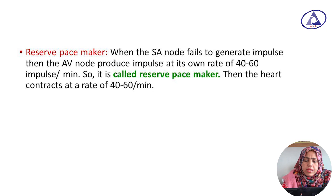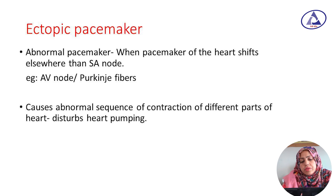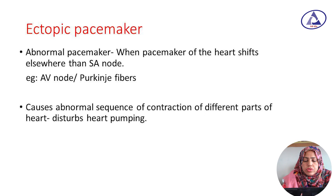What is the reserve pacemaker? When the SA node fails to generate impulses, the AV node produces the impulse at its own rate of 40 to 60 impulses per minute — so it is called the reserve pacemaker. What is the ectopic pacemaker? The ectopic pacemaker is also called the abnormal pacemaker. When the pacemaker of the heart shifts elsewhere than the SA node, it is called the abnormal pacemaker. The AV node and Purkinje fibers act as ectopic pacemakers. An ectopic pacemaker causes an abnormal sequence of contraction of different parts of the heart and disturbs heart pumping.